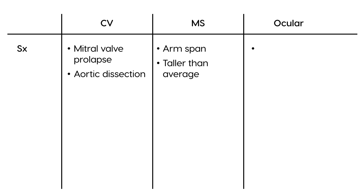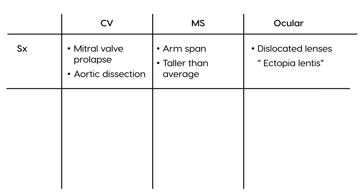The lens of the eye is affected in the following way: it is dislocated. This is given a special name which is often on licensing exams — known as ectopia lentis. So those are the physical exam findings rather than symptoms per se.